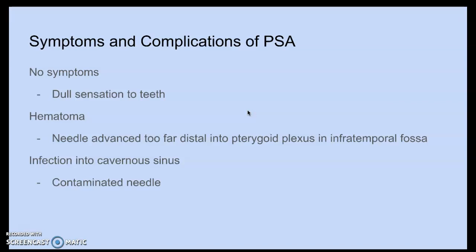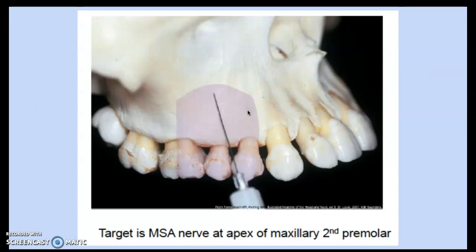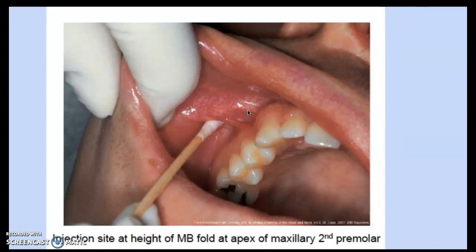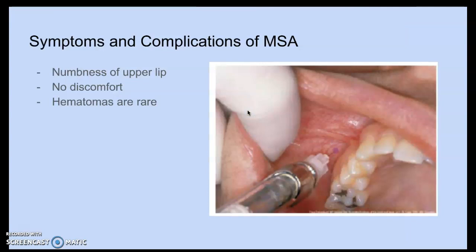The MSA (middle superior alveolar block) anesthetizes the pulp and buccal periodontia of the maxillary premolars and the mesial buccal root of the first molar. The MSA is not present in all patients — if absent, you need to do ASA and PSA. The target is at the apex of the maxillary second premolar, with the injection site at the mesial buccal fold at that apex.